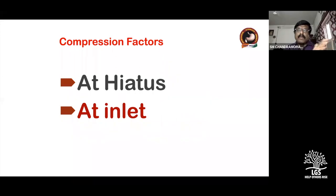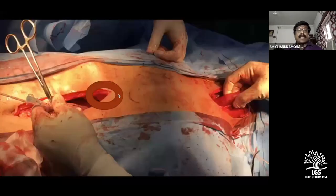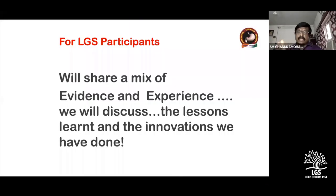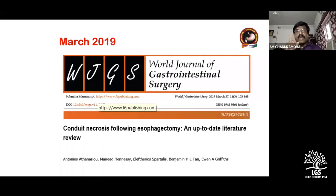Compression factors are important when taking the conduit through the retrosternal route. This is less of a concern through the posterior mediastinum after esophagectomy, but through the retrosternal route compression can occur at the hiatus or at the thoracic inlet — which is why we have started cutting and widening the upper thoracic inlet. For LGS participants today, I'll share a mix of evidence and experience, lessons learned, and innovations we have made.